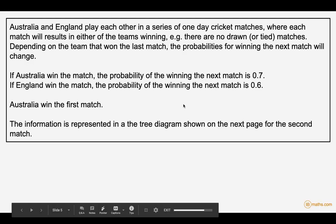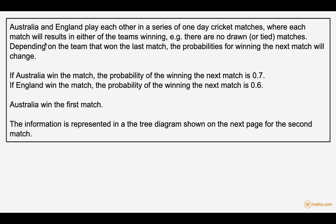We're going to look at Markov chains and some general background. We've got England and Australia playing each other in one day cricket. We know that Australia won the last match, so the probability they win the next match is 0.7. If England win the match, the probability of them winning the next match is 0.6.